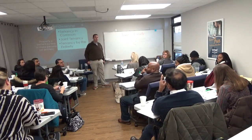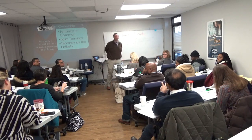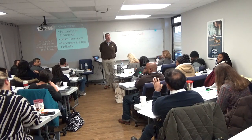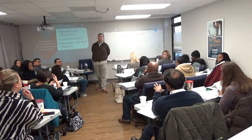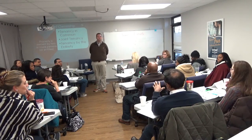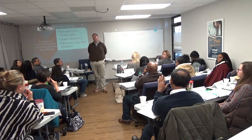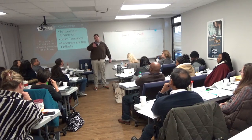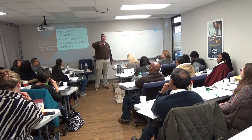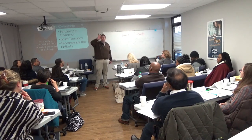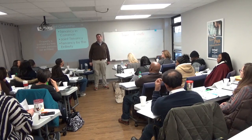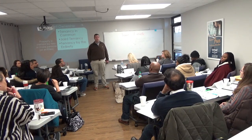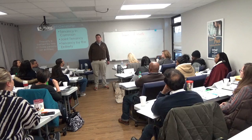In tenancy by the entirety, survivorship happens irrespective of a will. But if both spouses die at the same time, survivorship extends only to owners — so it would go to their will or probate. That's the law of intestate succession: if you die without a will, you die intestate, and the state of North Carolina sets up a pecking order — spouse first, then children equally, then parents, then siblings, then nieces and nephews, then first cousins, and then the state.